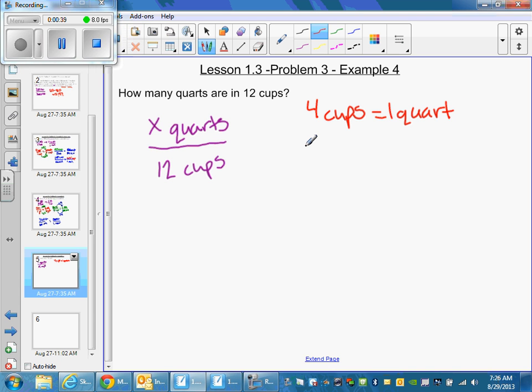A good piece of information to maybe memorize. So I'm going to take my information here and set up a proportion. I have X amount of quarts, and I'm going to start writing it like this. That's the official abbreviation for quarts over 12 cups.